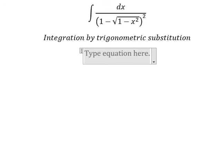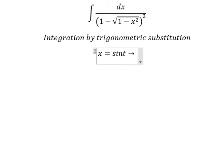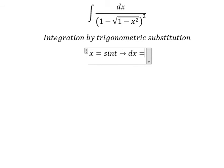We put s equal to sin(t). If we substitute sin(t) here, we get 1 minus sin²(t), which equals cos²(t). The square root of cos²(t) gives us cos(t). Next, taking the first derivative of both sides, we get ds equal to cos(t) dt.